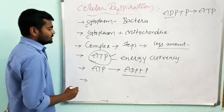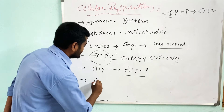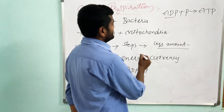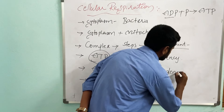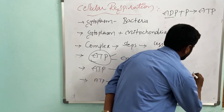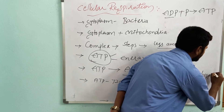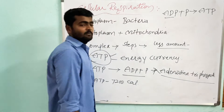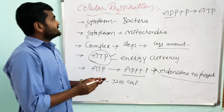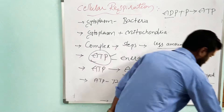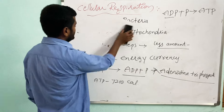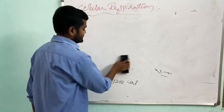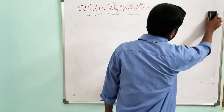One ATP can give almost 7,200 calories of energy. ATP stands for adenosine triphosphate — it is a chemical energy form. Just as solar energy is stored as chemical energy in photosynthesis, ATP is also a form of chemical energy. In this way, cellular respiration stores energy in the form of ATP, which releases 7,200 calories whenever needed.